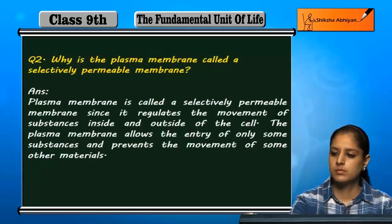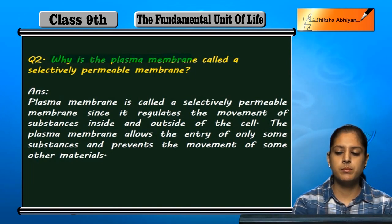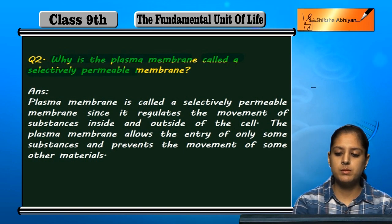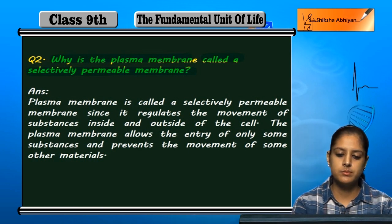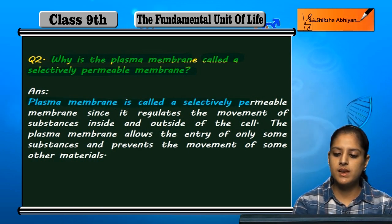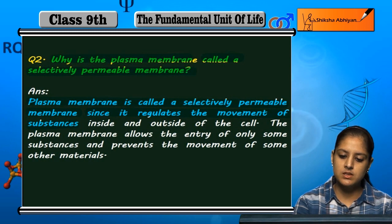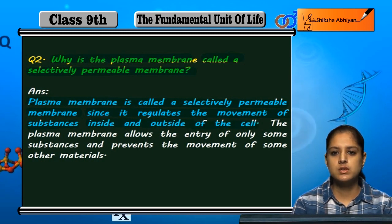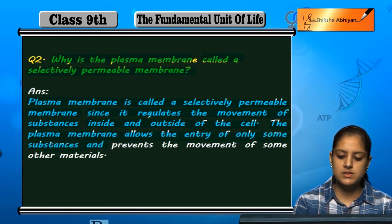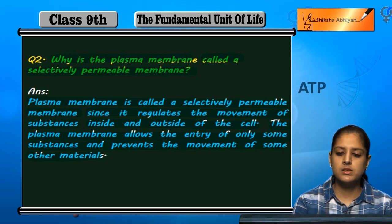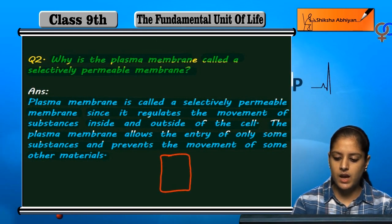Why is the plasma membrane called a selectively permeable membrane? The plasma membrane is called a selectively permeable membrane since it regulates the movement of substances inside and outside of the cell. The plasma membrane allows the entry of only some substances and prevents the movement of some other material.